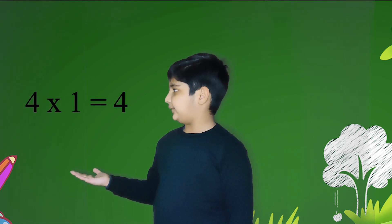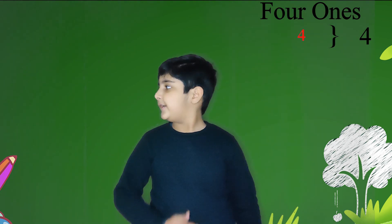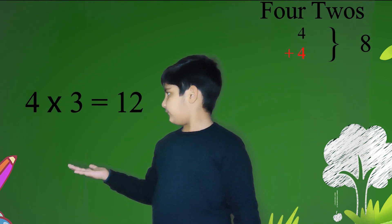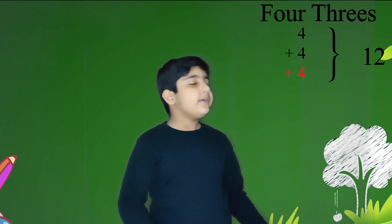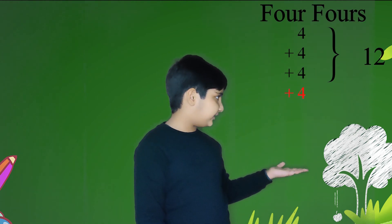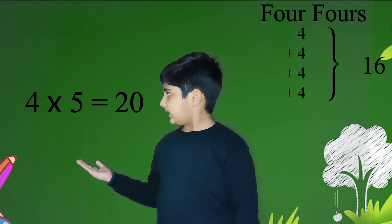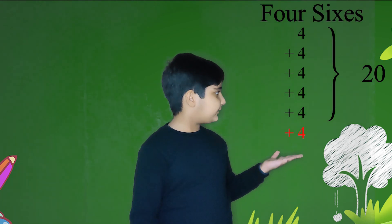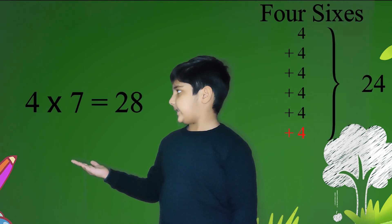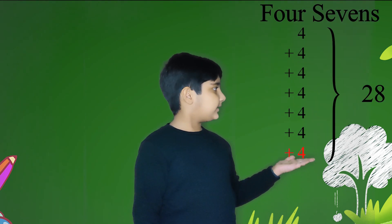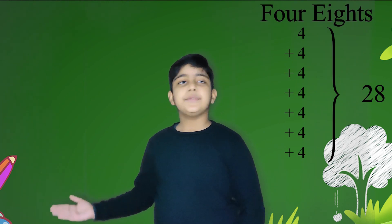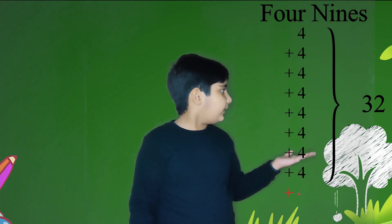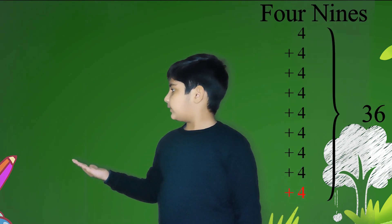4 ones are 4, 4 twos are 8, 4 threes are 12, 4 fours are 16, 4 fives are 20, 4 sixes are 24, 4 sevens are 28, 4 eights are 32, 4 nines are 36, 4 tens are 40.